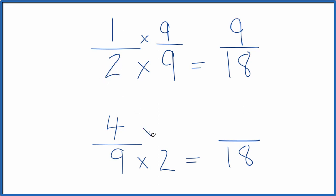Down here, we'll multiply four times two. Four times two is eight. And we have the same denominator. That lets us compare the numerators.